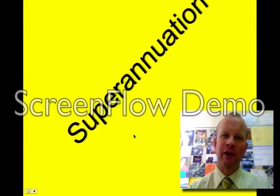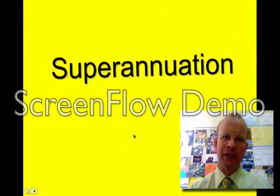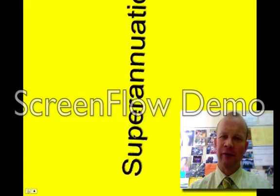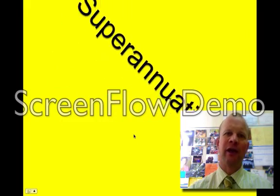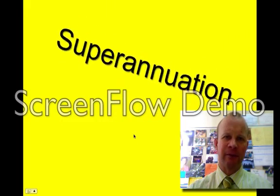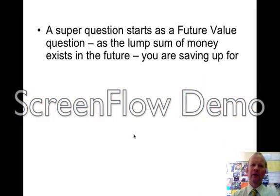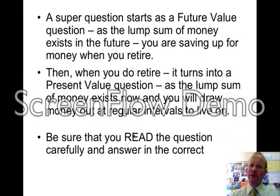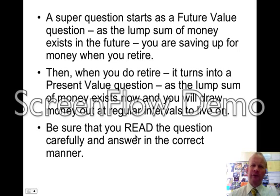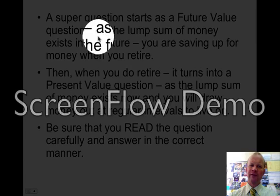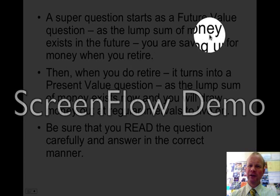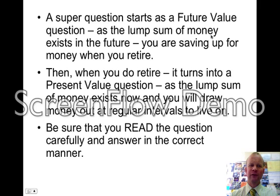G'day. In this section you're going to be looking at superannuation and how that works with a graphic calculator, and how it starts as a future value question and ends up being a present value question. A super question starts off as a future value question because you're saving the money up to exist in the future — you're saving it and the lump sum of money is going to exist in the future, so it's going to be a future value question.